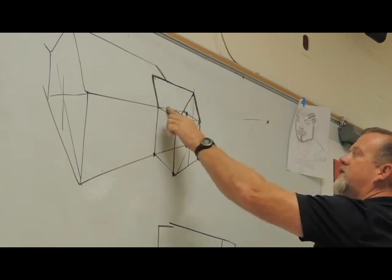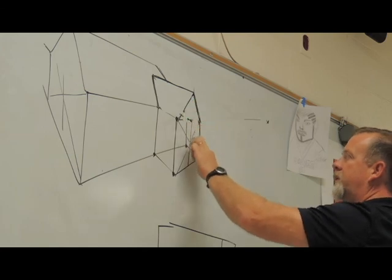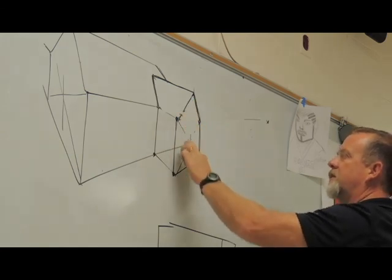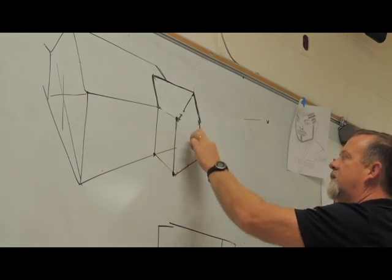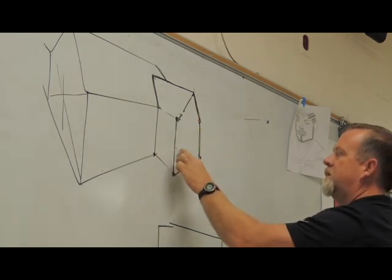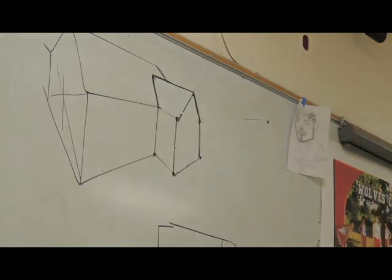So now we've extruded that shape in two-point perspective and put a roof on it that ties to an existing roof. When you take all the lines out, it looks something like this.